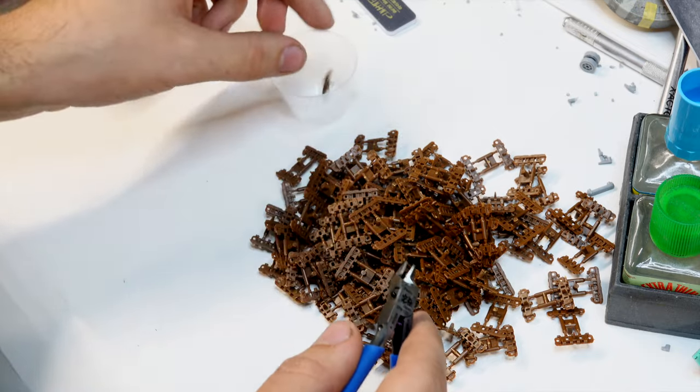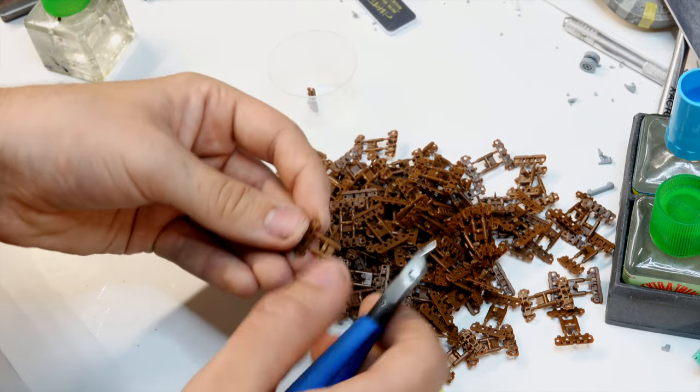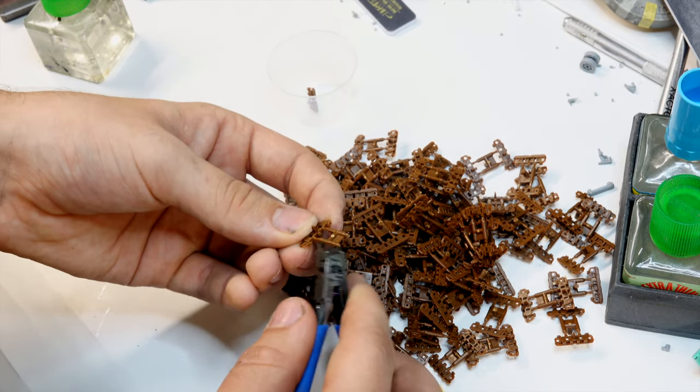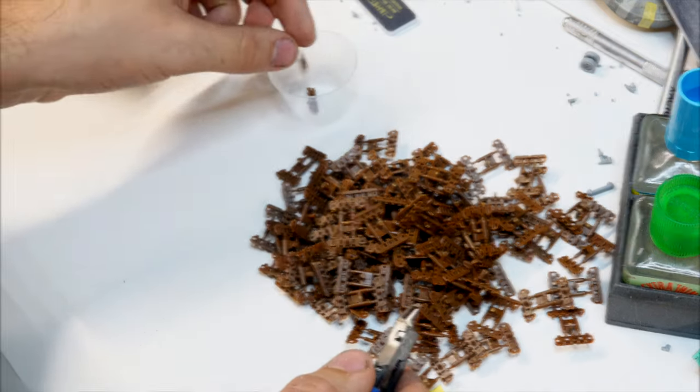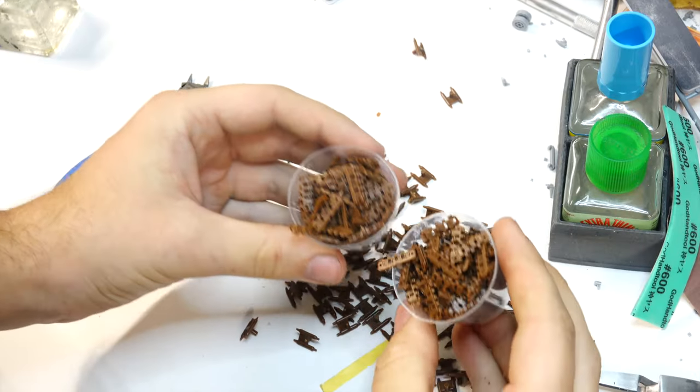And here we go, tracks, by far my least favorite part of any tank build. Fortunately, these aren't that bad as all I have to do is snip off their attachments. And that's 20 minutes of work in 5 seconds.